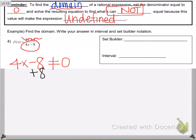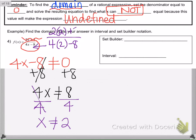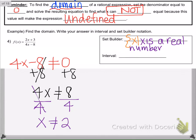Let's solve the first domain example. We set the denominator equal to 0, add 8 to both sides, then divide by 4, and we get x cannot equal 2. To verify: if you plug 2 into the denominator, you get 8 minus 8, which is 0 — making it undefined. In set builder notation: x such that x is a real number, but x cannot equal 2.